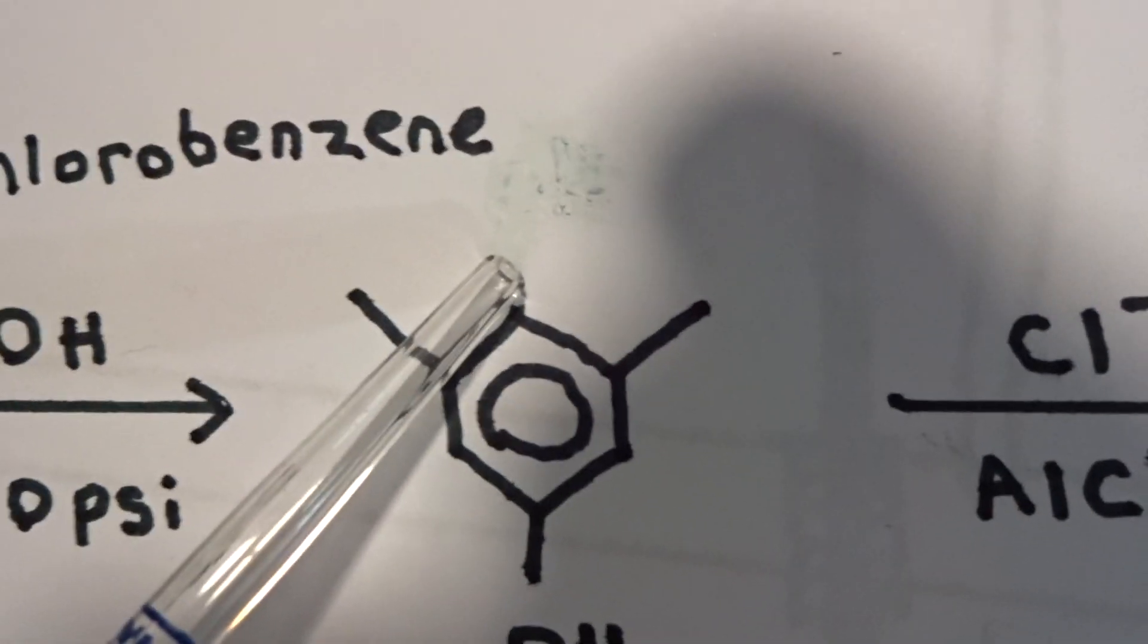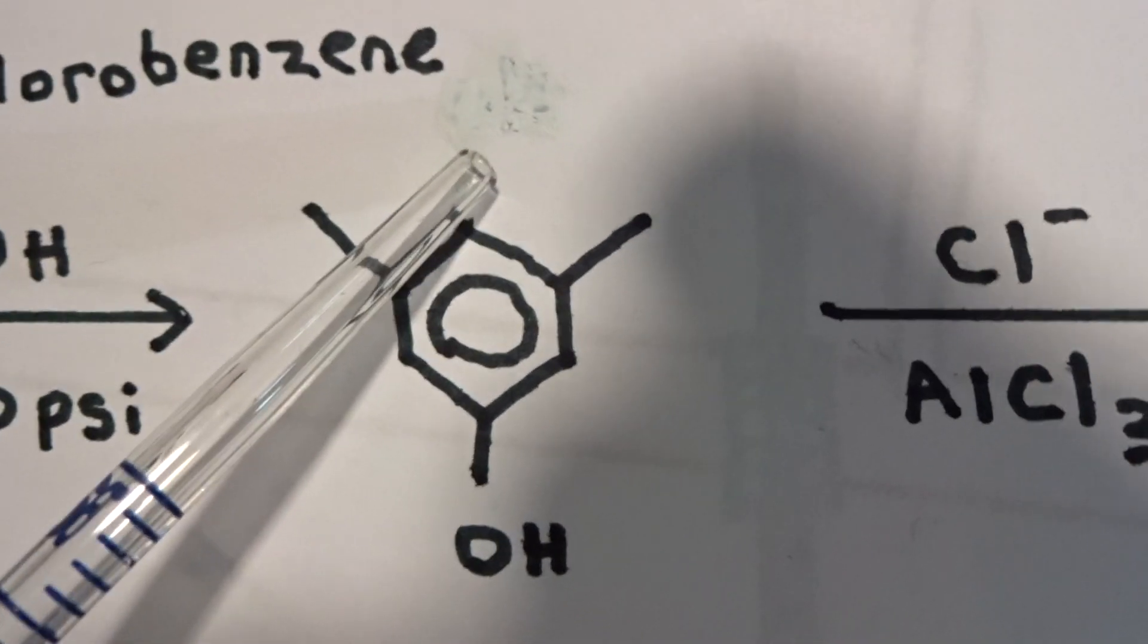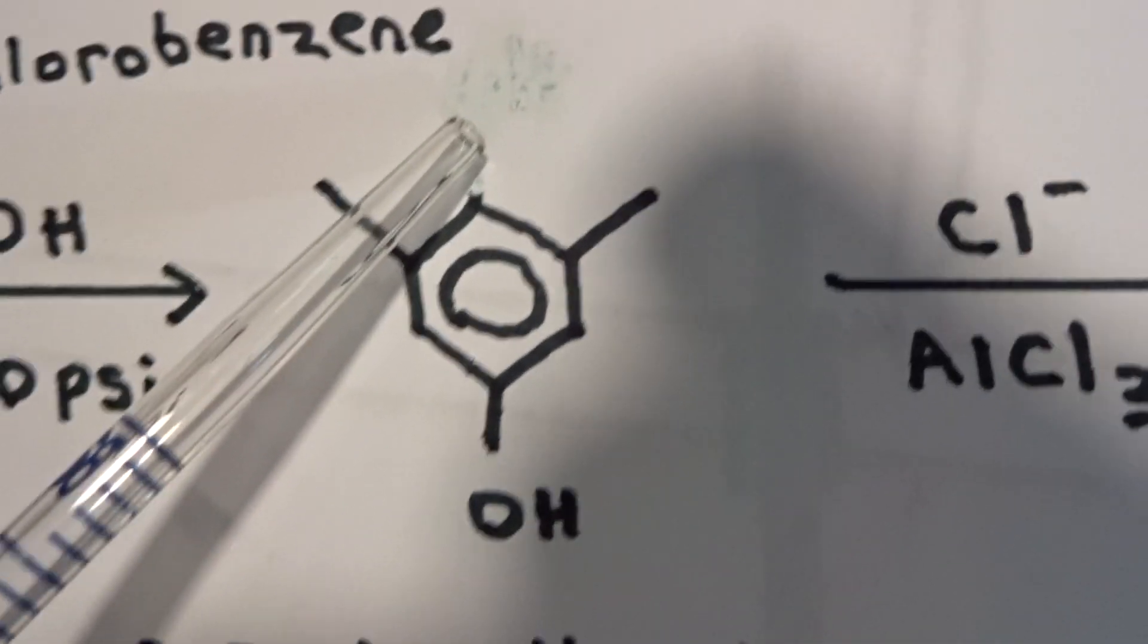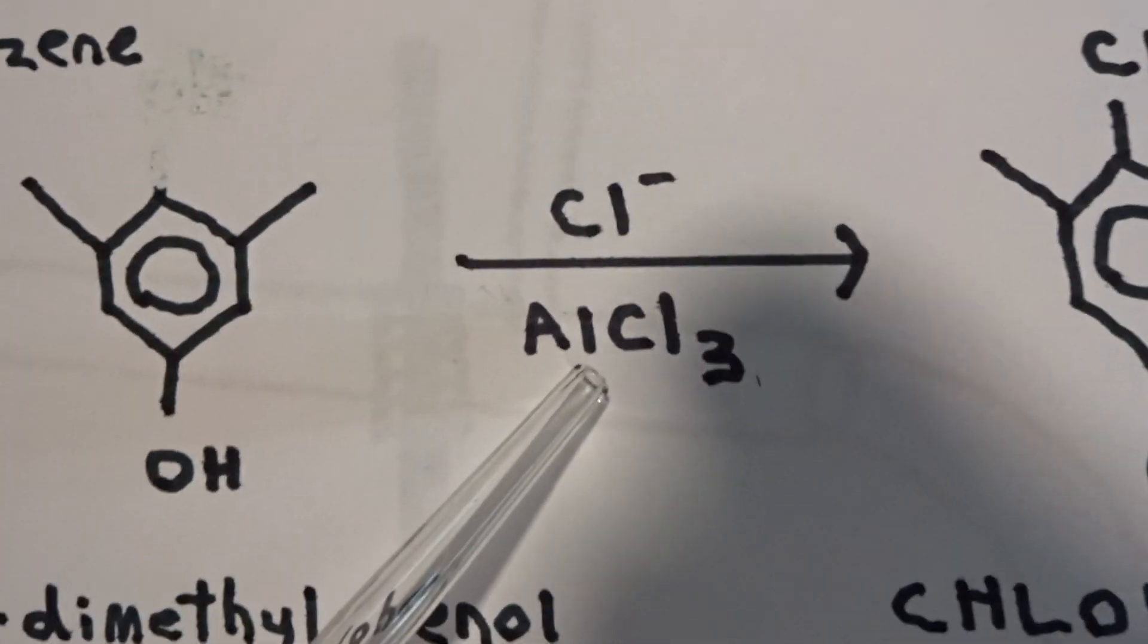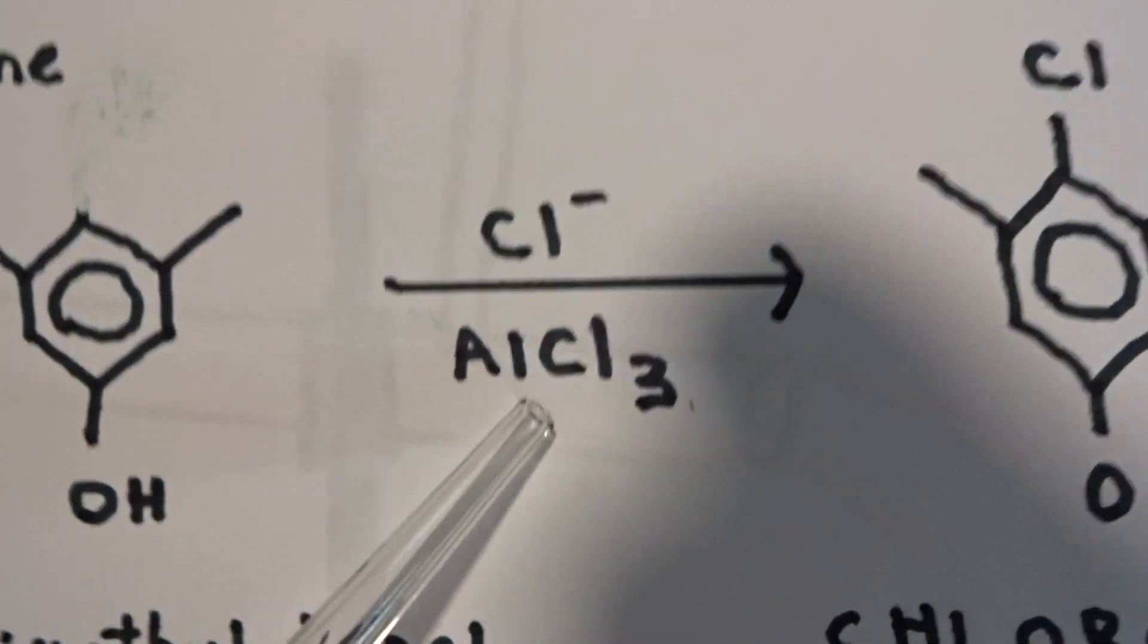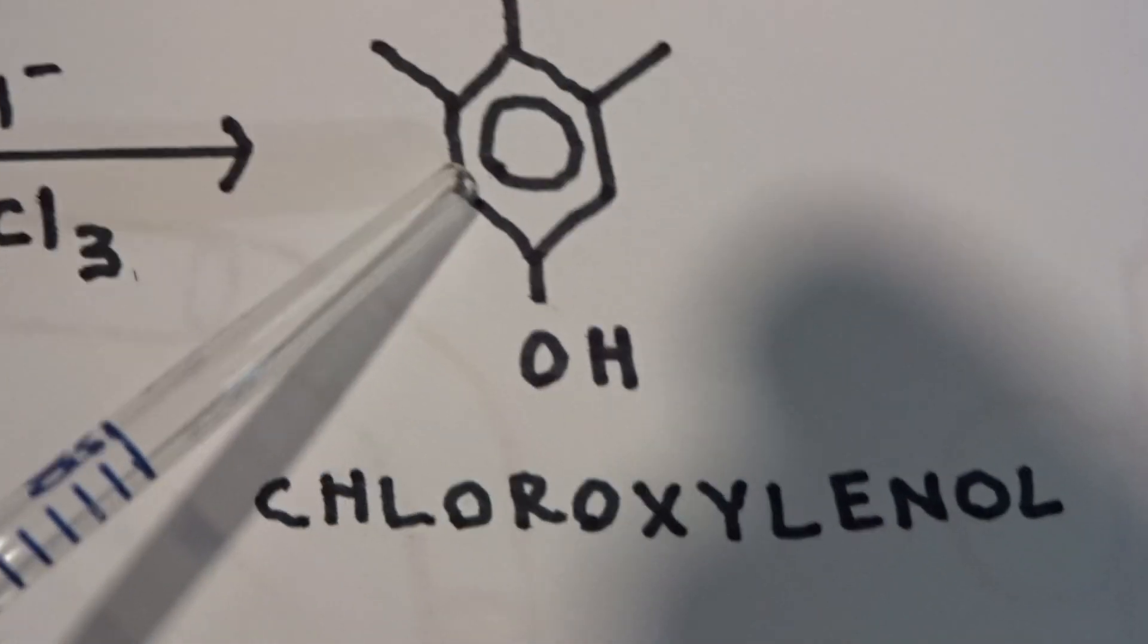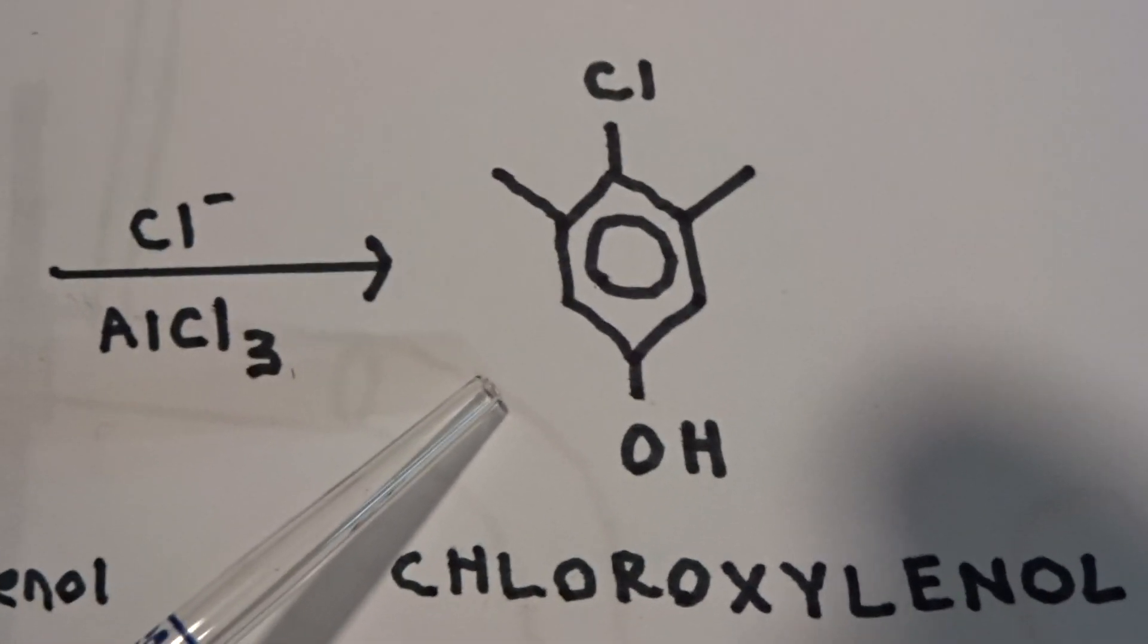Now, we need to attach the chlorine in an EAS, electrophilic aromatic substitution reaction, no other. React it with chlorine in the presence of AlCl3, aluminum trichloride, and you will form your product molecule of chloroxylenol.